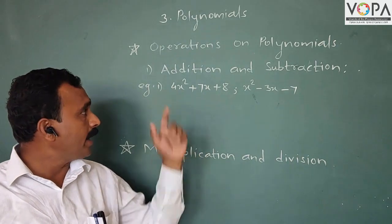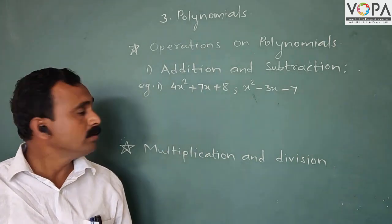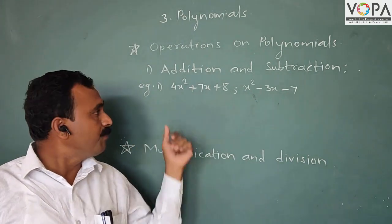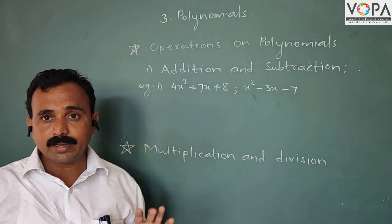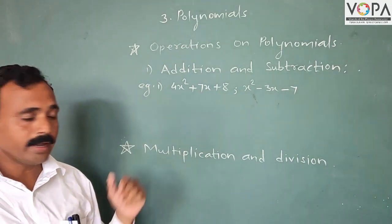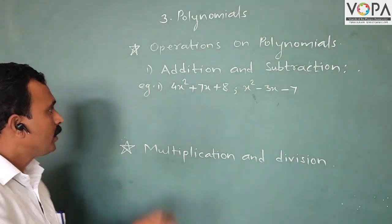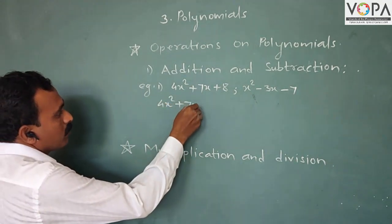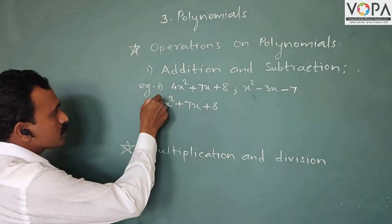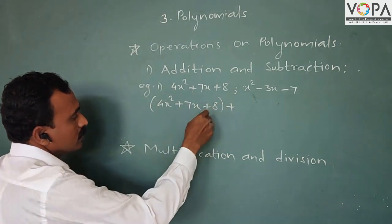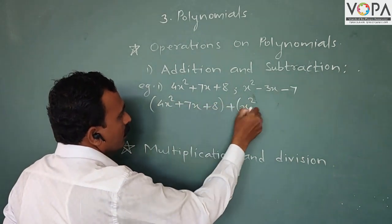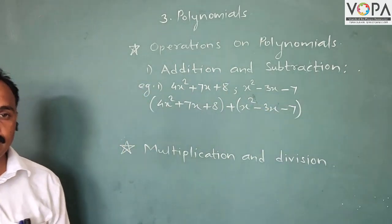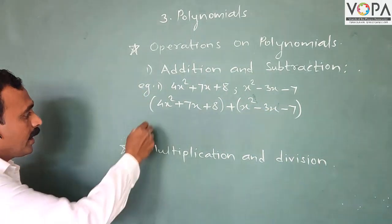Now first we take addition. Addition of polynomials: if two terms are like terms, they have the same index. The first polynomial is 4x² + 7x + 8, and the second polynomial is x² - 3x - 7. Now add the like terms.